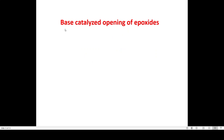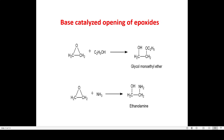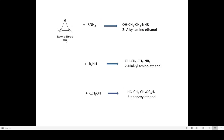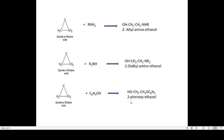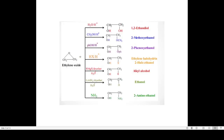Here are some examples of base-catalyzed opening of epoxide: when an epoxide reacts with ethyl alcohol, we get glycol monoethyl ether. When it reacts with ammonia, we get the corresponding product ethanolamine. When the epoxide reacts with a primary amine, the product is 2-alkylaminoethanol. When it reacts with a secondary amine, the product is 2-dialkylaminoethanol. When it reacts with phenol, we get 2-phenoxyethanol. These are the examples for acid and base catalyzed reactions with their corresponding products.